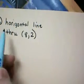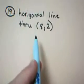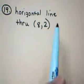Alright, first question, question number 19. Find an equation of a horizontal line that passes through the ordered pair (8,-2). Now, remember,